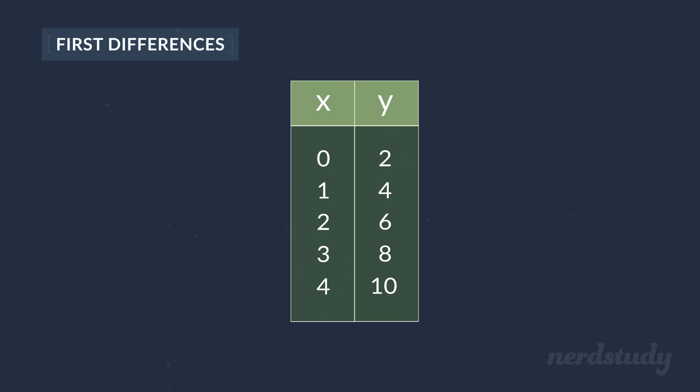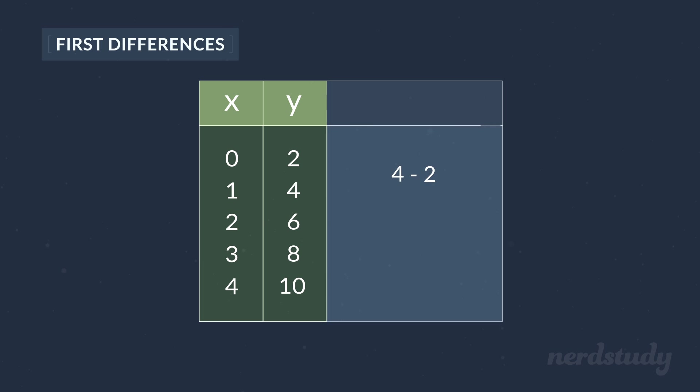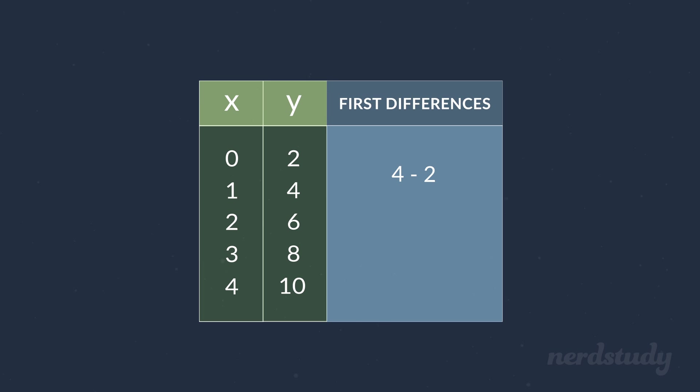Alright, so from here, all we have to do is take the second y value and just subtract it from the first y value. This is our first entry in the first differences column.